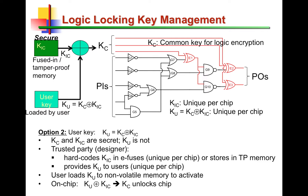With unique keys per chip, we need some additional hardware on-chip — a simple XOR operation would do. To produce the common key KC on-chip, an XOR operation is performed between the key loaded on the tamper-proof memory and the key loaded on a non-volatile memory, which we refer to as the user key. It is KIC and KU that are XOR'd on-chip to produce the common key KC. In this scheme, the common key KC is the secret of the designer, and KIC is also the designer's secret — but KU need not be secret.